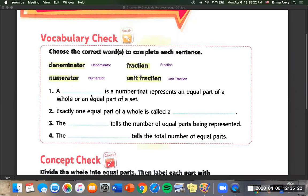Number one: a blank is a number that represents an equal part of a whole or an equal part of a set. Well let's look at our options. We have denominator, numerator, fraction, and unit fraction. We know it's not going to be denominator or numerator because those are parts of a fraction. So we know it's going to be one of these two. We remember a unit fraction always is an equal part.